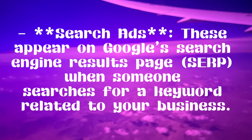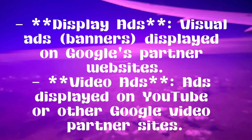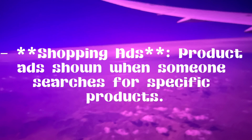Search ads appear on the Google search engine results page (SERP) when someone searches for a keyword related to your business. Display ads are visual banner ads displayed on Google's partner websites. Video ads are ads displayed on YouTube or other Google video partner sites. Shopping ads are product ads shown when someone searches for specific products.